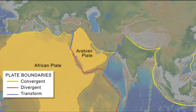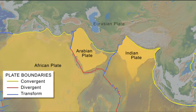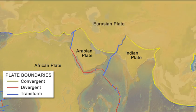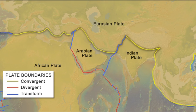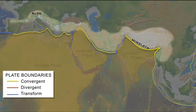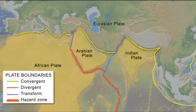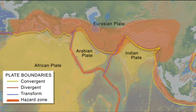The African, Arabian, and Indian plates collide with the southern margin of the Eurasian Plate along a 1,200-kilometer convergent boundary. This has resulted in a mountain chain that stretches from the Alps to the Himalayas. Whereas divergent, transform, and subduction zone plate boundaries produce relatively narrow belts of earthquakes, continent-continent collision produces broad earthquake zones.